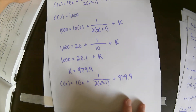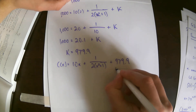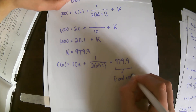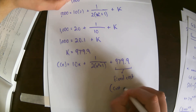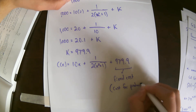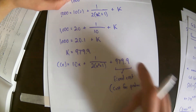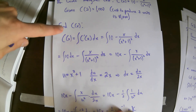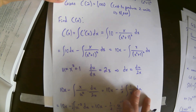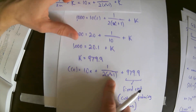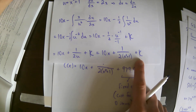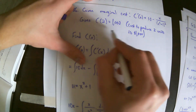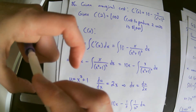Just to note: that constant 979.9 is the fixed cost — the cost for producing 0 items. Whenever you go from marginal cost to a cost function, that last step is finding the fixed cost. Integration tells you there's a constant there but not its value, which is why the initial condition must be given — to pin down the fixed cost.